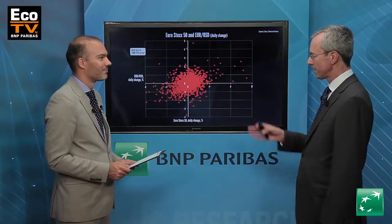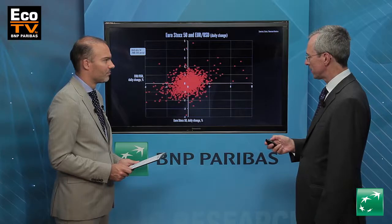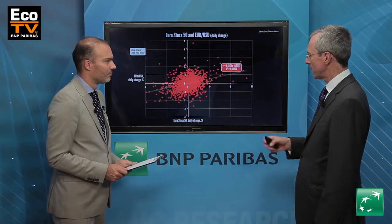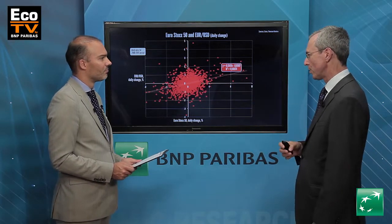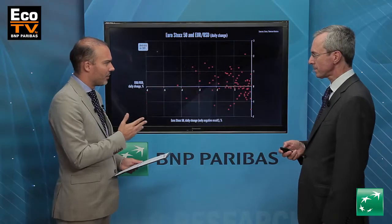It is certainly different from what we have seen historically. This scatterplot shows for daily data since 2008 what has been the relationship. To put some structure in the data, I've drawn this regression line which shows a positive slope. What this means is that historically, when stocks went down, typically the EUR also weakened. But on the short term, recently we saw something different.